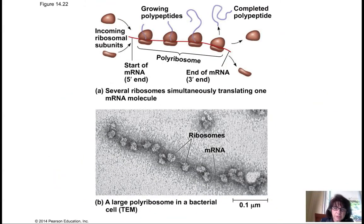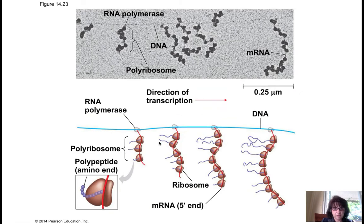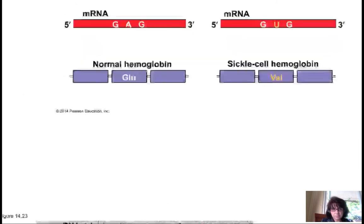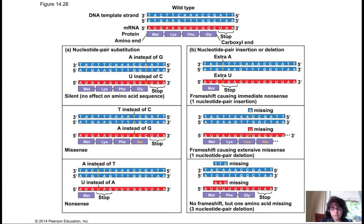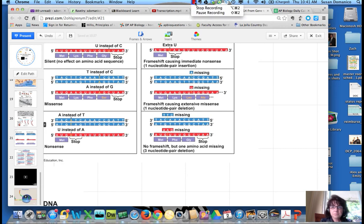Remember, bacteria do not process their RNA — they make it, transcribe it, and then translate it immediately. So you can have a complex of many ribosomes attached to a single mRNA, and in fact that mRNA may even be attached to an RNA polymerase that's spewing out the RNA as you go. Bacteria have a pretty quick life cycle, so they need to make proteins quickly, and this is one way they can make a lot in a short amount of time. The discussion of mutations will be left to the previous version of a screencast — it's all the same material; you'll just see slightly different colored figures in the other book.